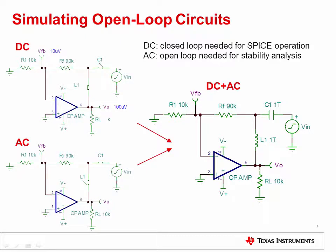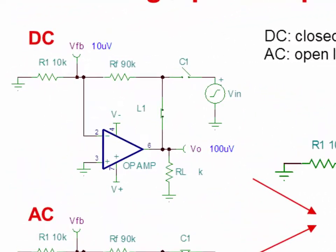To properly generate the open loop curves in SPICE, the circuit being simulated must have a closed loop feedback path at DC, while being open for all AC frequencies. The circuit at the top left shows the desired DC circuit, where the L1 switch is closed and the C1 switch is open. A closed loop circuit at DC allows the output to be biased to a proper DC operating point, commonly mid-supply.